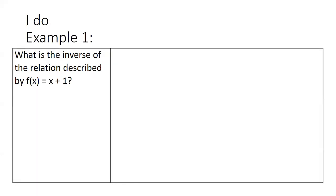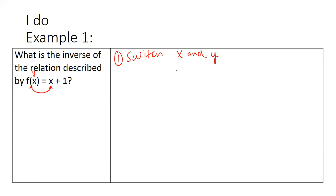What is the inverse of the relationship f(x) = x + 1? If you watched the do-now video, it gave you some steps to follow when finding the inverse. Step one is to switch x and y — remember, f(x) is just a fancy way of saying y — so we end up with x = y + 1.